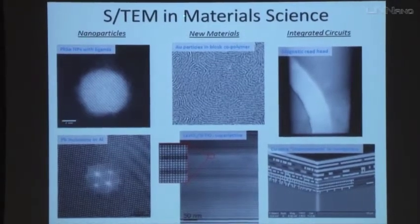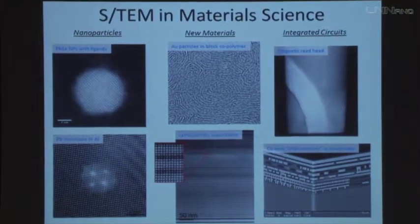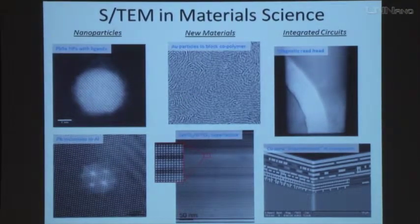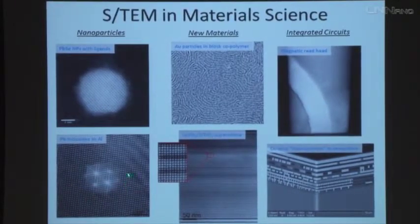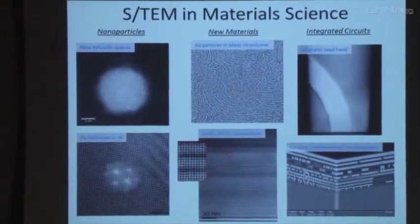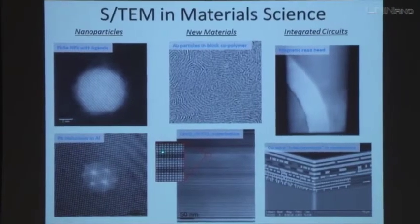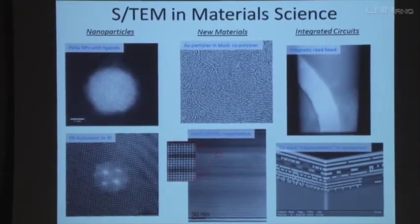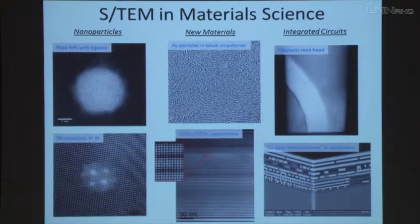I'm mainly looking at scanning transmission electron microscopy because I mainly do material science, so I won't be talking much about biological materials. Here I show a few different images of materials and structures. We can look at the atomic structure of materials, like lead selenide nanoparticles with ligands on the outside, buried inclusions like a lead particle within an aluminum matrix, gold particles included in a block copolymer — two types of carbon that self-assemble into a very ordered structure — multilayers of objects, and magnetic read heads in integrated circuits.